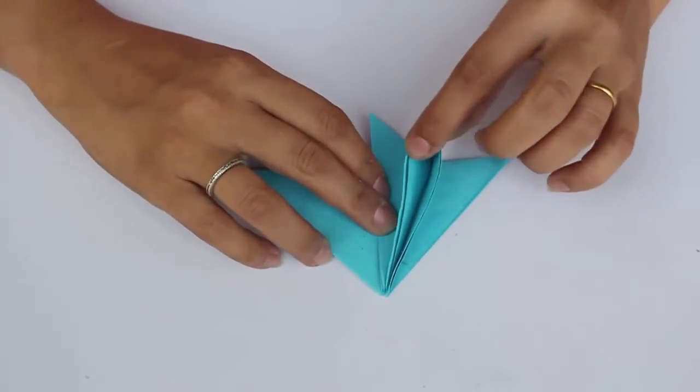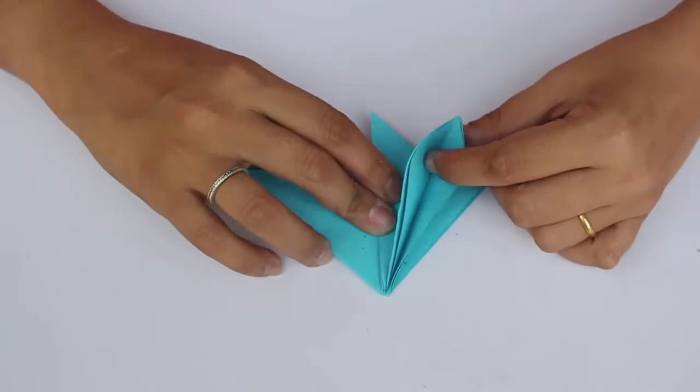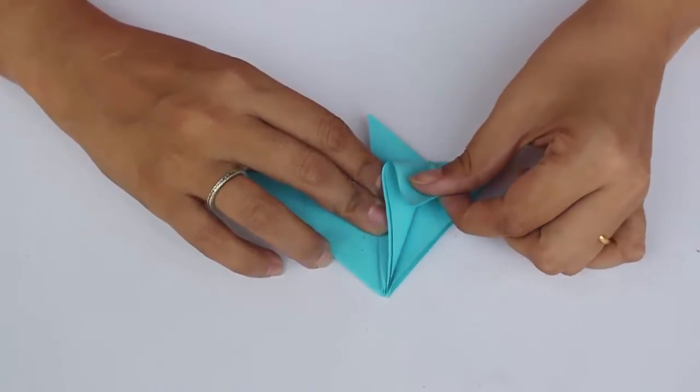Open the central flap. You'll see two layers of paper. Assume that they are almost one sheet. Fold them together into a squash like this.